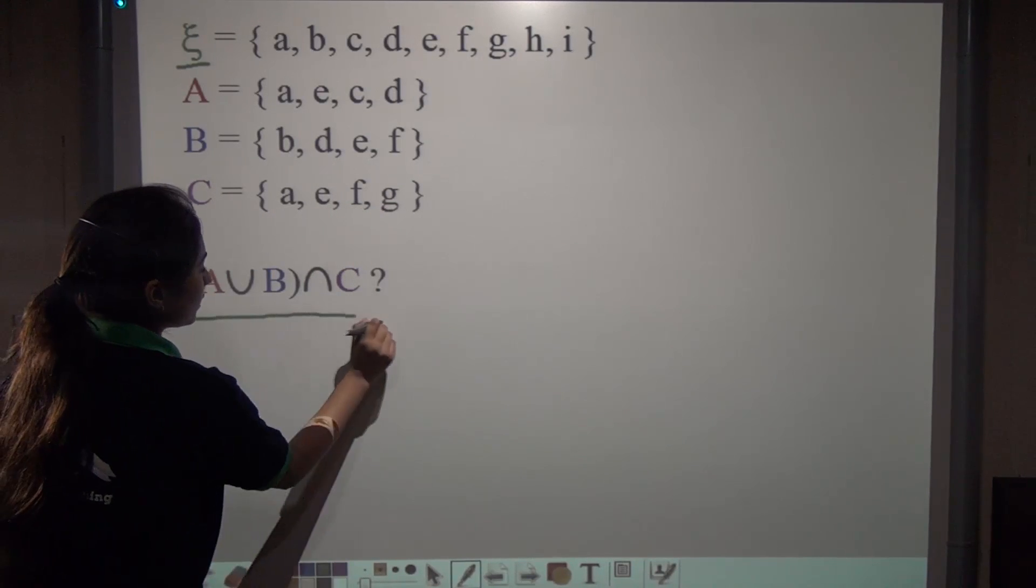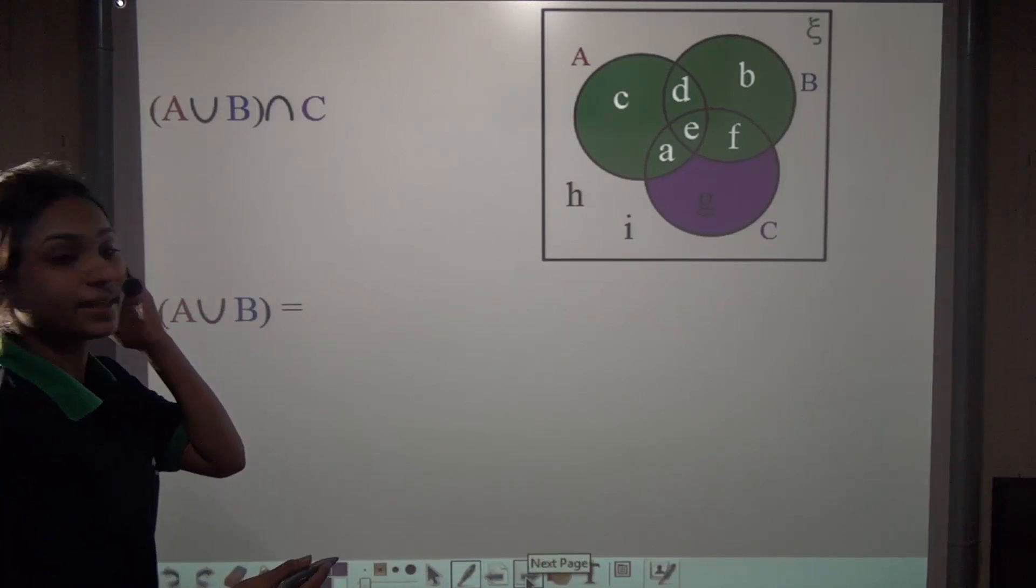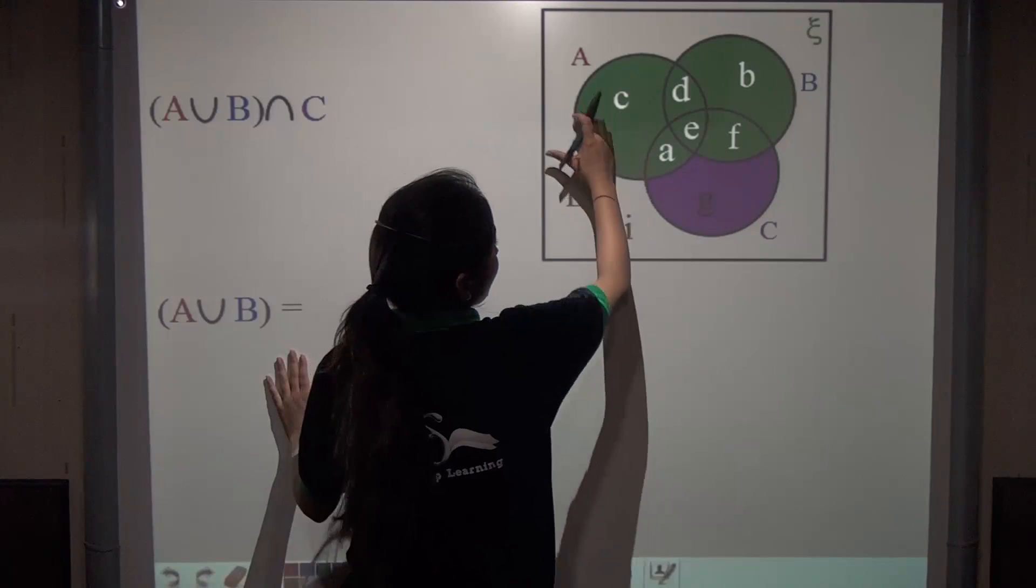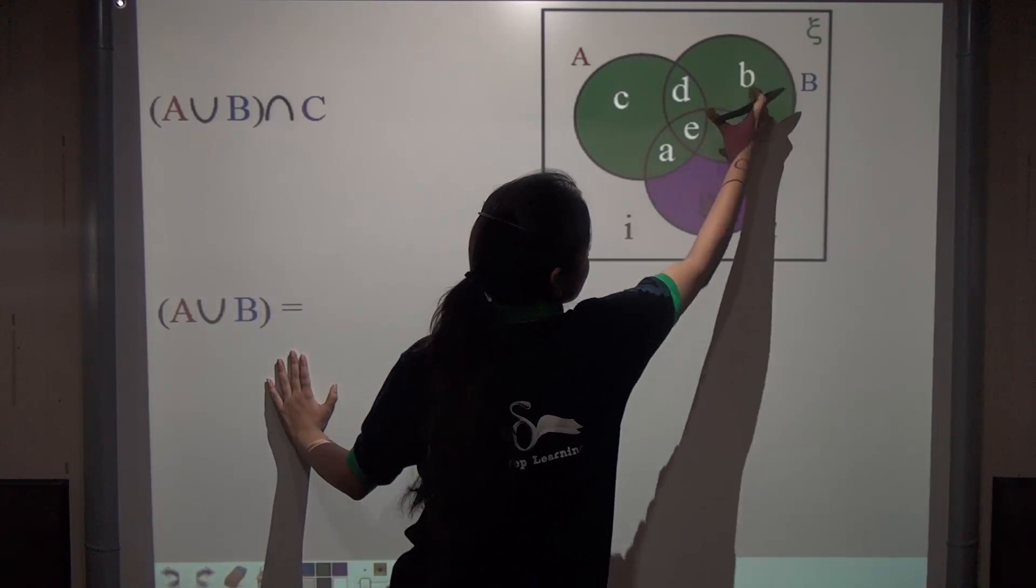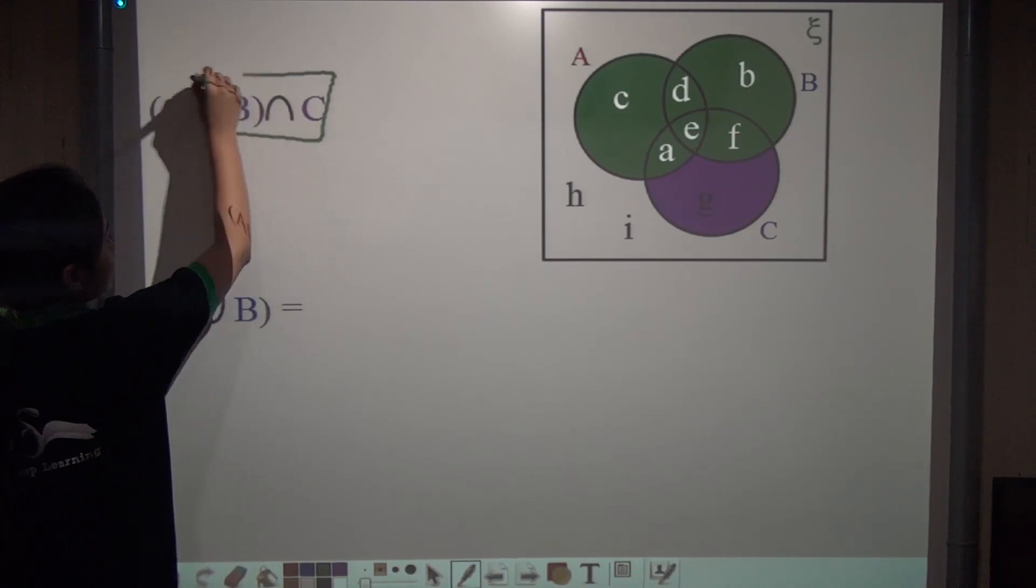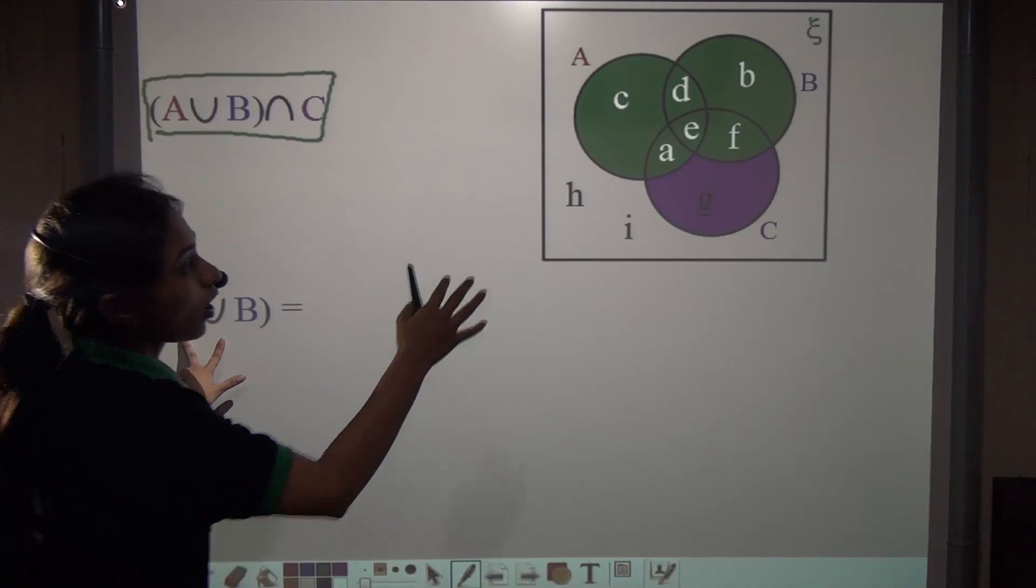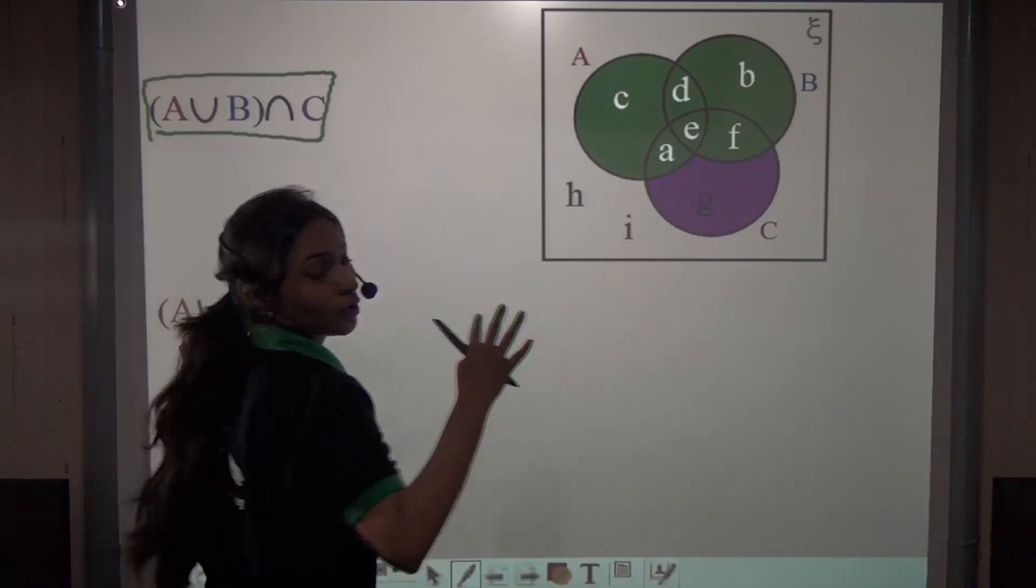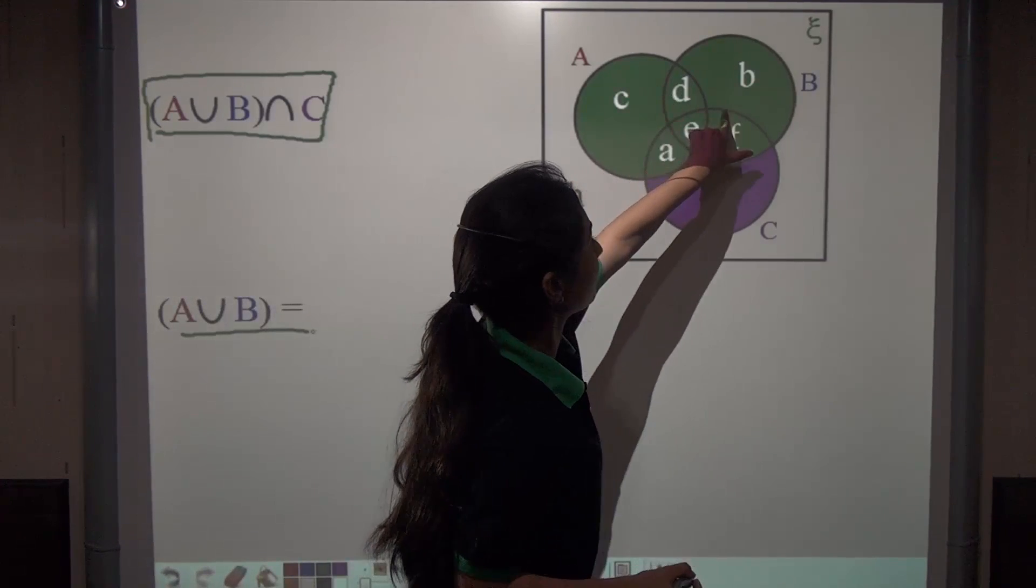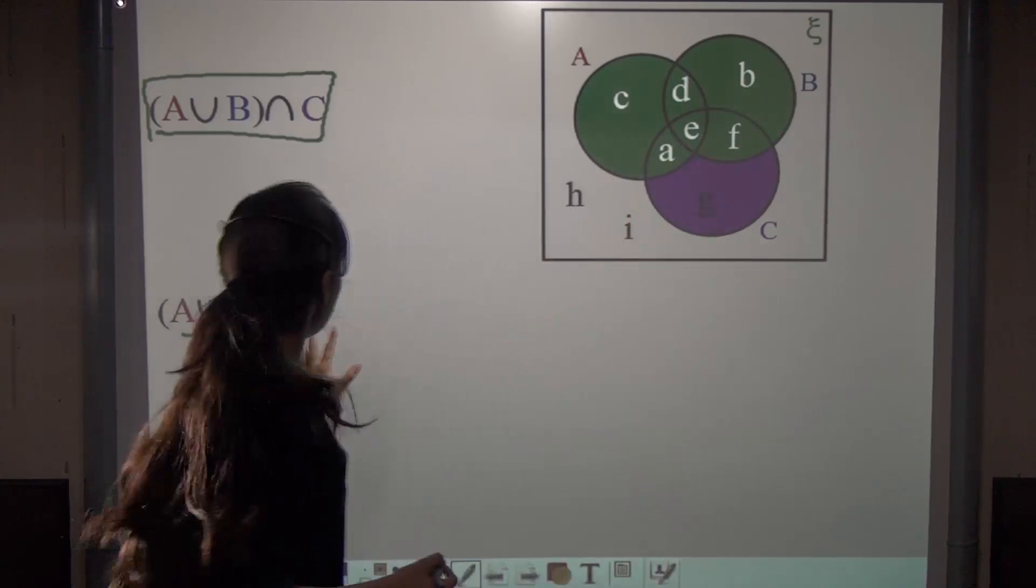Well see, I have represented it on a Venn diagram for you. Here set A is this, set B is this, and set C is this one. Now first of all, for finding out this, we have to first find out the bracket portion, A union B. Looking at this Venn diagram, you can easily find out A∪B. You can see we have colored A and B for you in green. All the letters falling in this green part represent A union B.